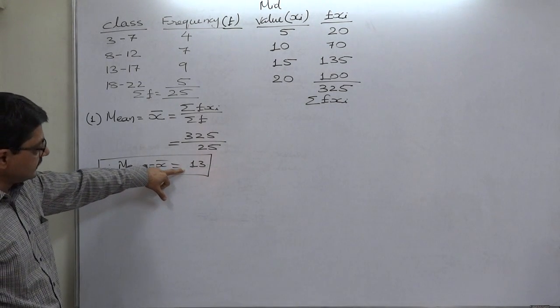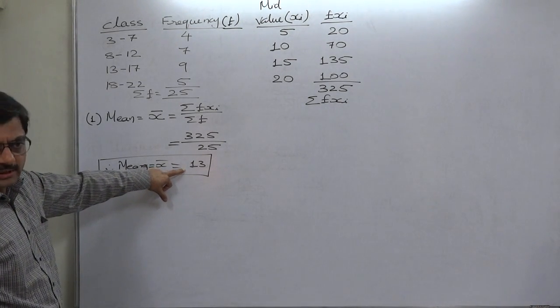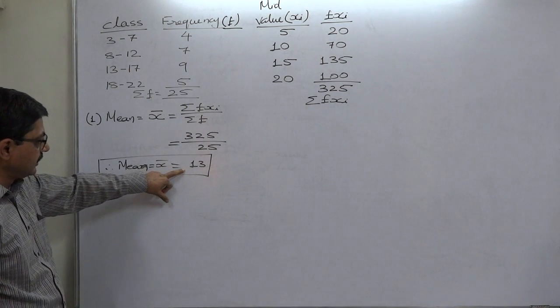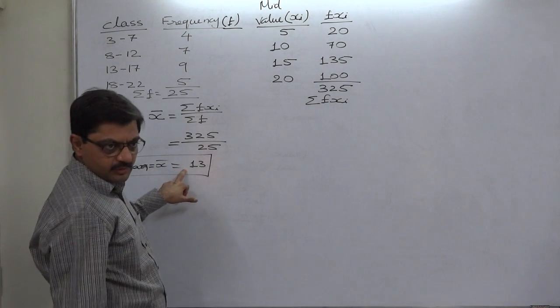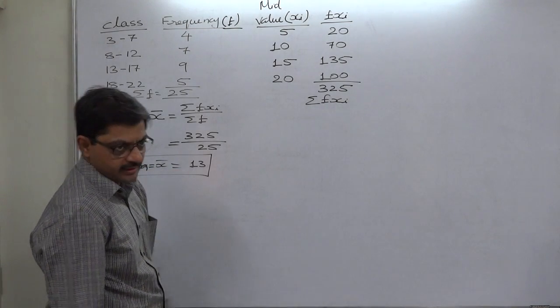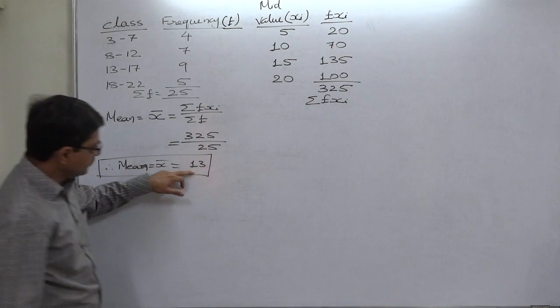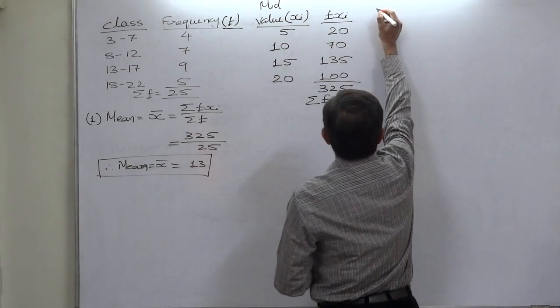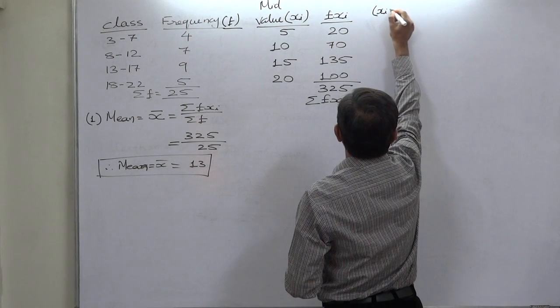So now there are two alternatives for calculation of variance and standard deviation. One route is x minus x bar and another route is x square. Let us go for x minus x bar route because we have integer value of mean.